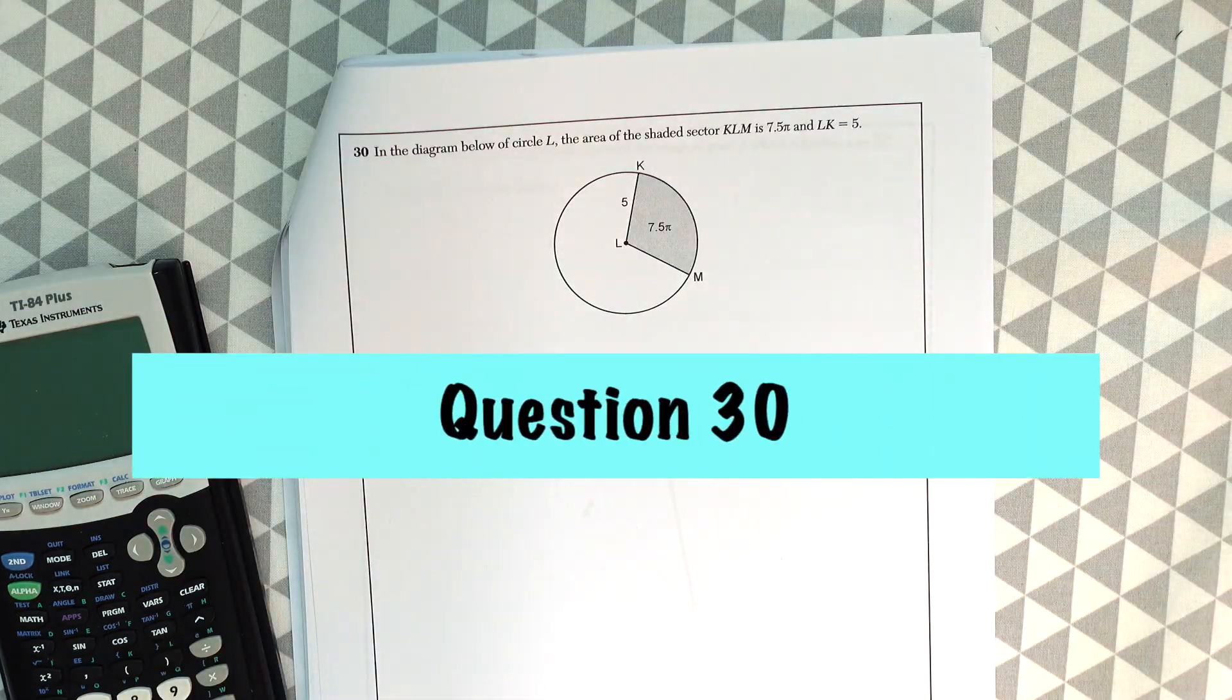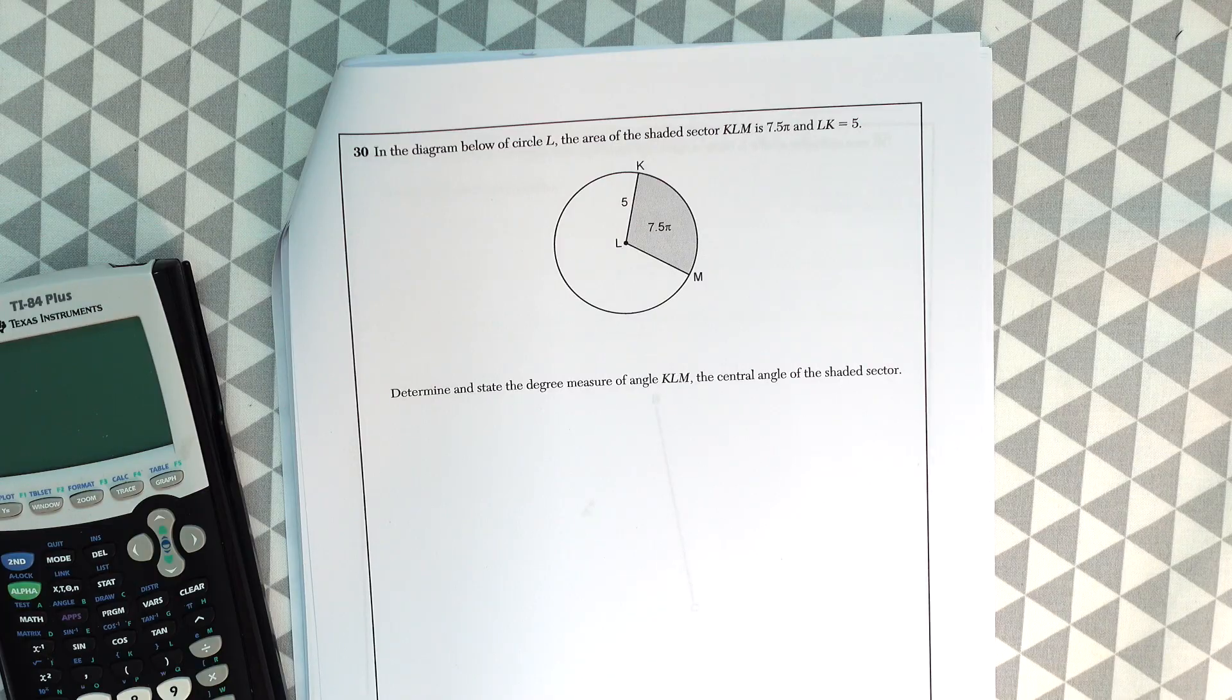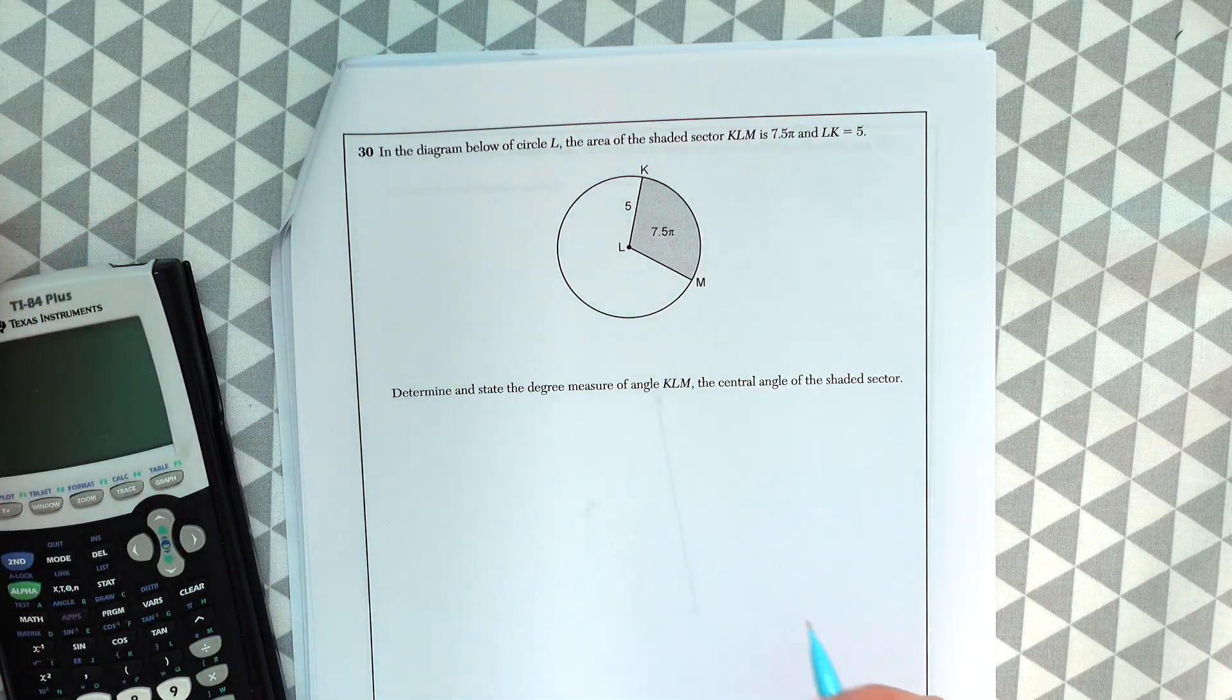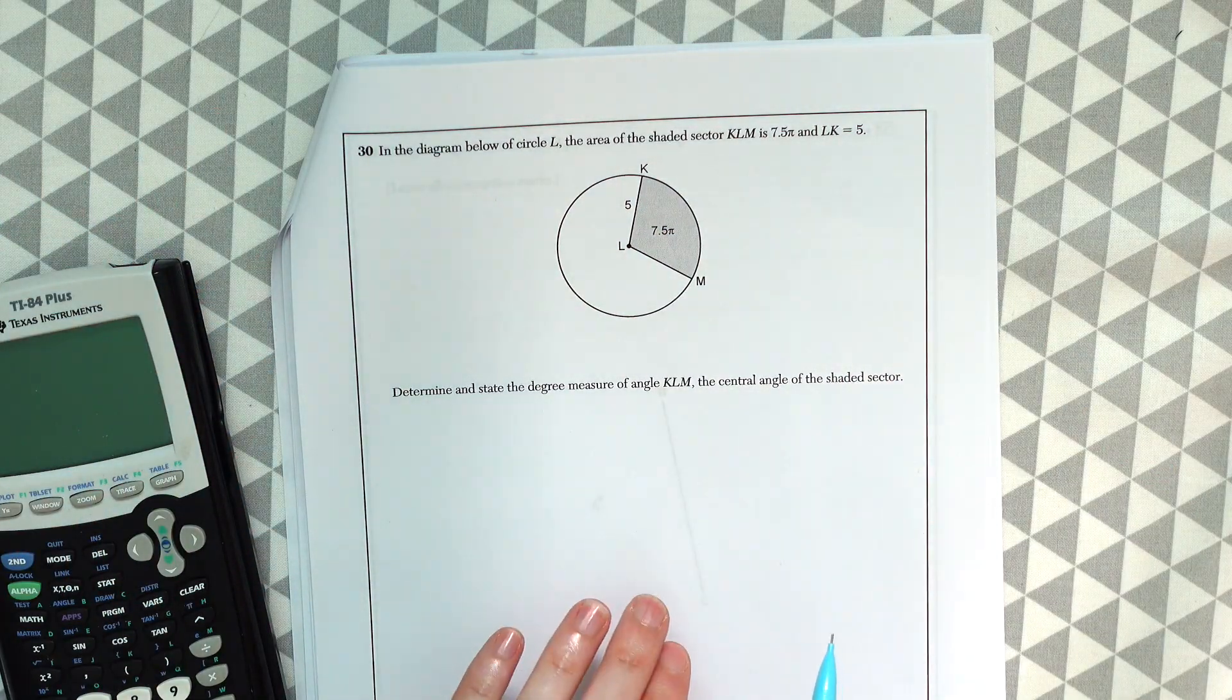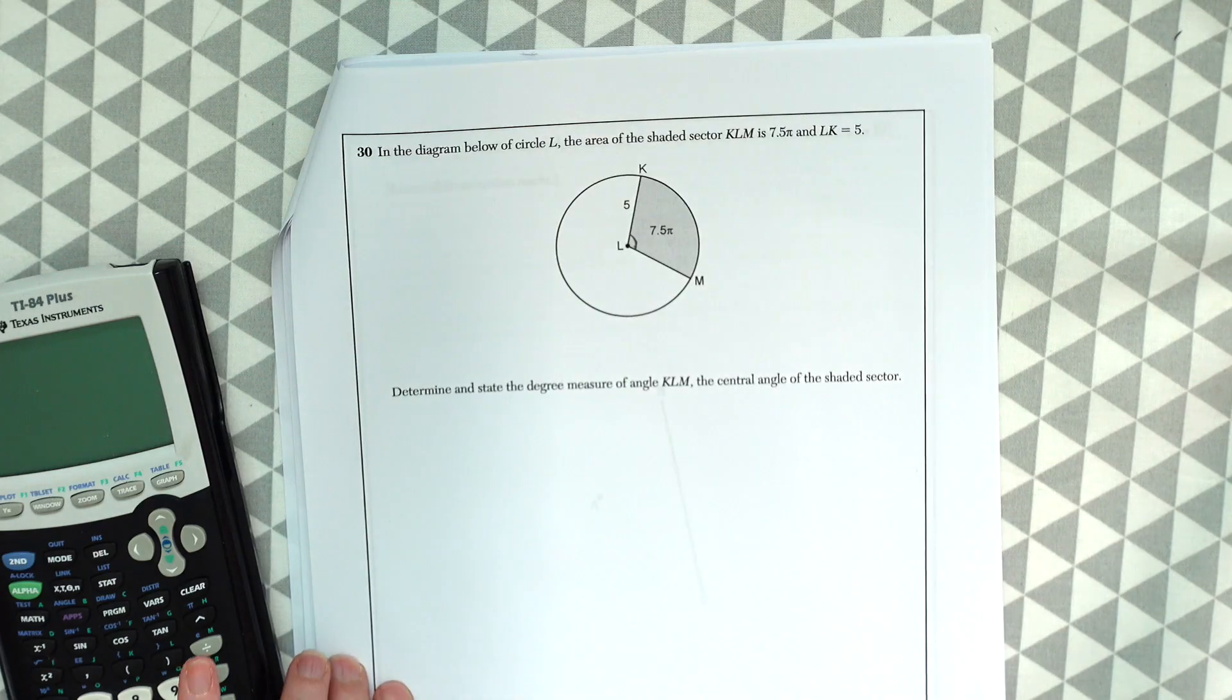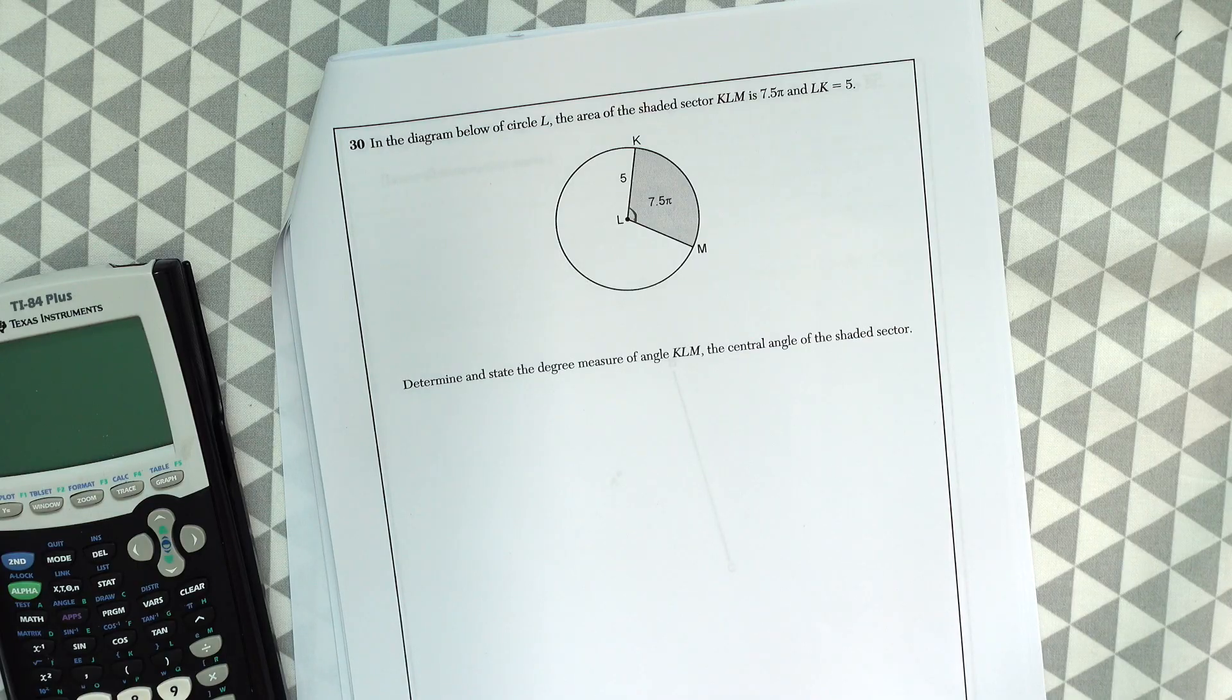Question number 30. In the diagram below of circle L, the area of the shaded sector KLM is 7.5 pi. So they give us that this area here is 7.5 pi. And LK, the radius, is equal to 5. Determine and state the degree measure of angle KLM, the central angle of the shaded sector. So we're looking for the value right here. So this is another one of those kind of working backwards questions, where they give us the area of the sector, but we're going to have to find the central angle.